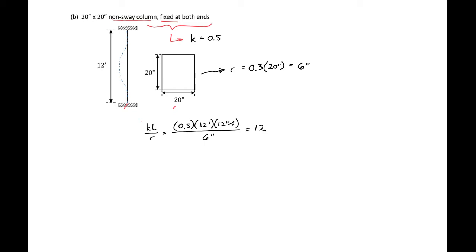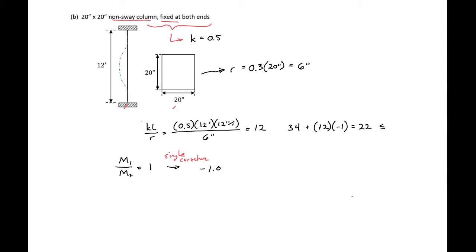We compare this to our ACI limit, assuming M1/M2 equals 1. For single curvature, we use negative 1.0 in the limit expression: 34 plus 12 times negative 1 equals 22, which also must be less than or equal to 40. Since our kL/r of 12 is less than 22, no slenderness needs to be considered.